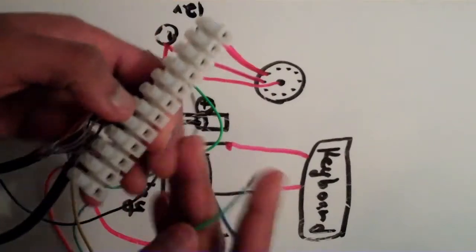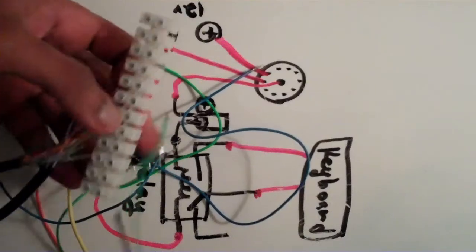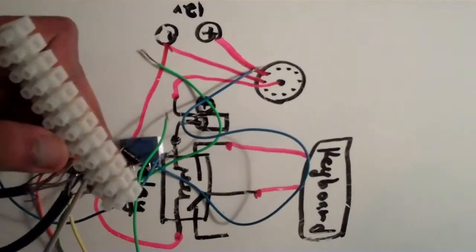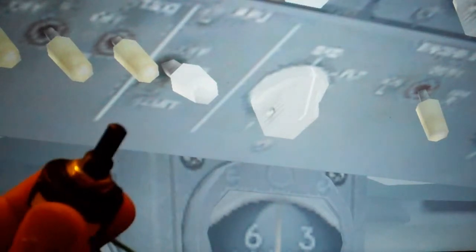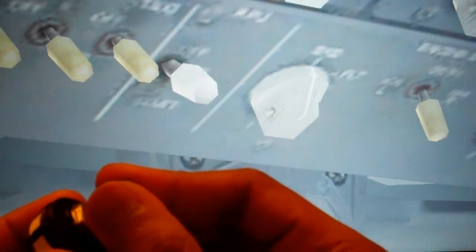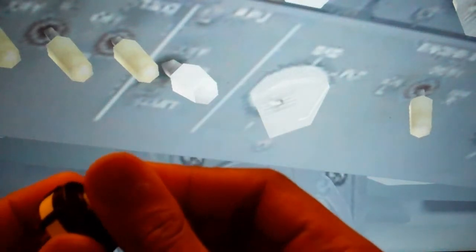Okay, now let's see this work. This is the overhead panel, this is the engine starter switch for the number one engine, and this is the rotary switch that I built. Let's turn the switch on—here we go. Now let's turn it off.